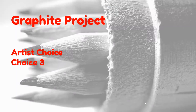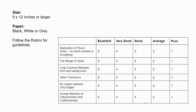Graphite Project: Artist's Choice 3. Here we're going to talk about what you need for your artist's choice. Size 9 by 12 or larger — your paper can be black, white, or gray, and you need to follow the rubric for guidelines.